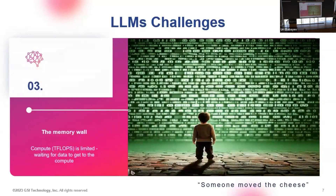The third challenge is the memory wall. We have strong compute, but as mentioned, the first challenge users experience is latency — we are waiting for data to go back and forth. The second challenge is that to run training or inference we need a cluster of instances, a fleet of instances, and we are paying a lot of money to consume them. We need a better way to utilize the capabilities of LLMs in terms of infrastructure.